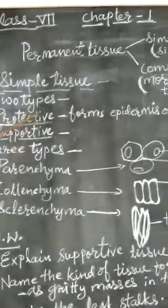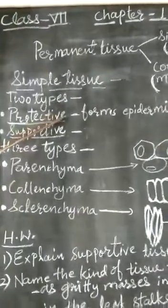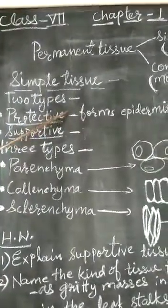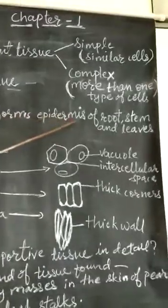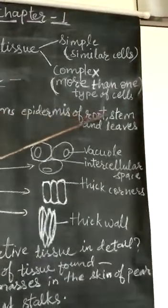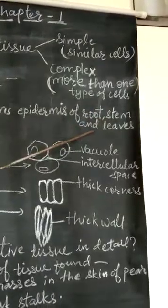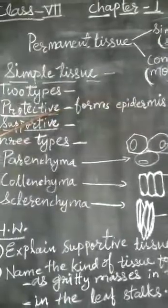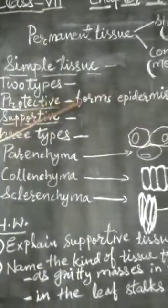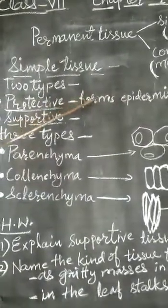Protective tissues are also called dermal tissue as they form epidermis of root, stem and leaves. This protective tissue is present in a single layer.